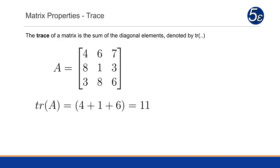Now, the trace of a matrix is the sum of the diagonal elements. So in this case, 4, 1, 6. So the trace of A is only focused on the diagonal.